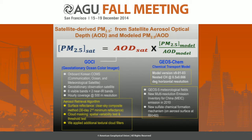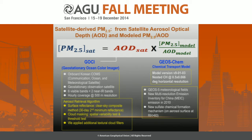As for the GEOS-Chem model, we did the simulation using a nested China simulation at a half by two-thirds degree resolution driven by GEOS-5 meteorological data. We also implemented the most updated emission inventory for China, as well as a new sulfate formation mechanism that accounts for sulfate formation on aerosol surfaces. With everything in place, we have the GOSI AOD and the PM2.5 to AOD ratio from GEOS-Chem, and we're going to evaluate their performance by comparing with ground measurements.